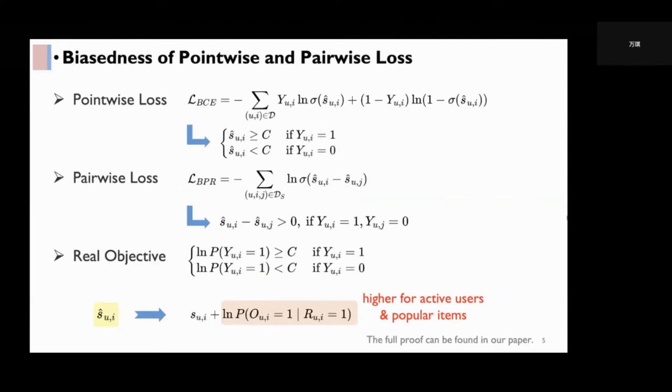BCE aims to capture the user preference on single items while minimizing the prediction discrepancy. It can be seen as a binary classification task between the relevance scores of positive pairs and negative pairs.